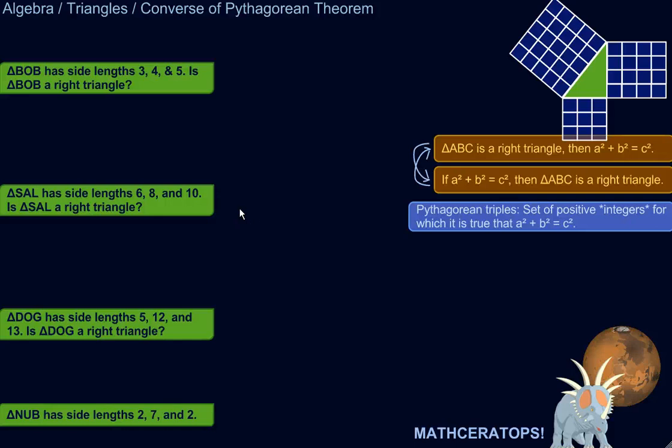So let's look at the converse of the Pythagorean Theorem. You're familiar with the Pythagorean Theorem. That's something like if triangle ABC is a right triangle, then A squared plus B squared equals C squared. Here's a little visual demonstration.